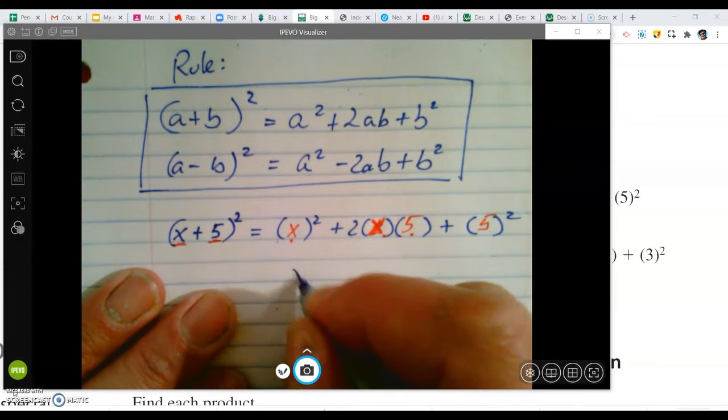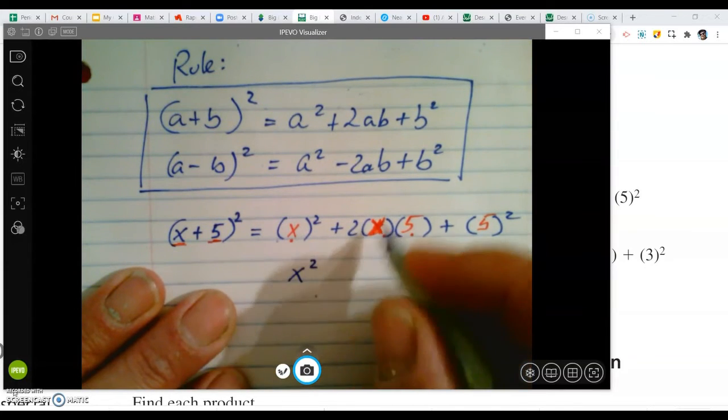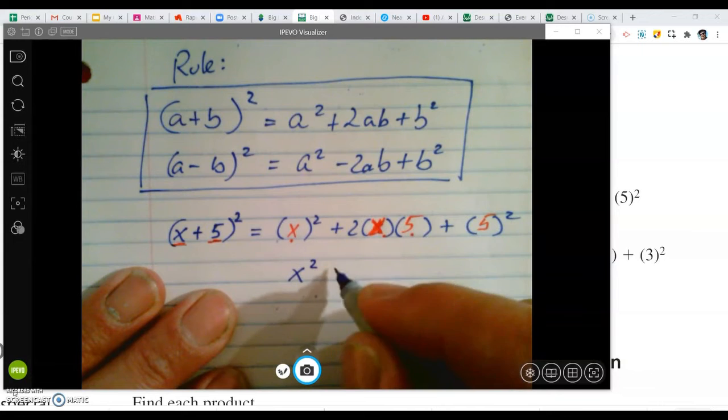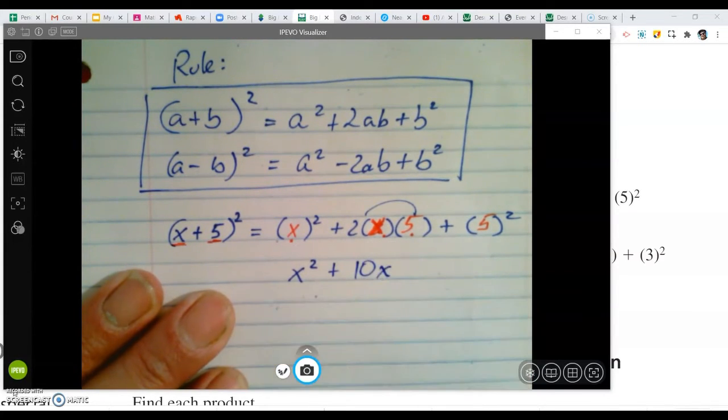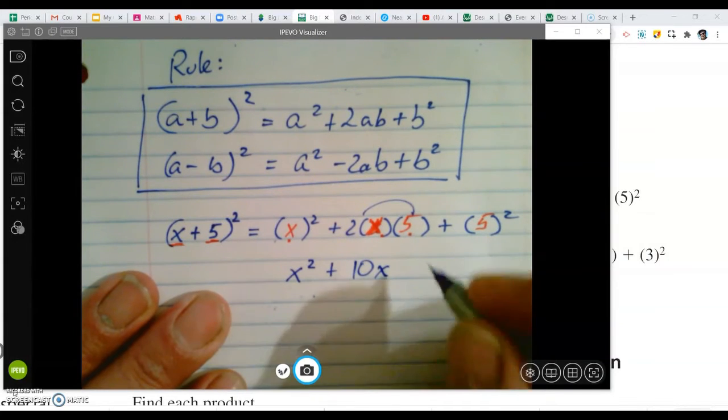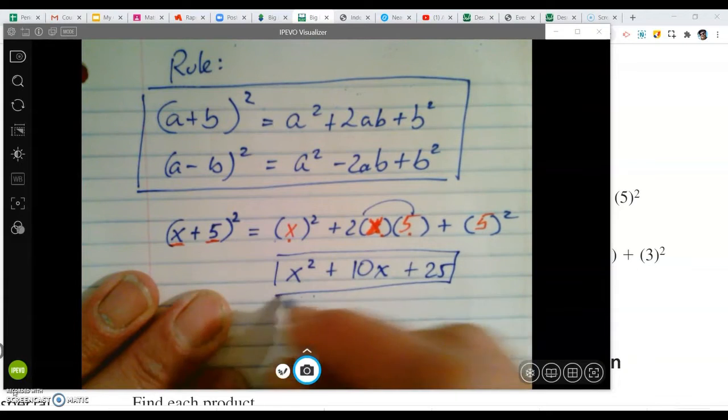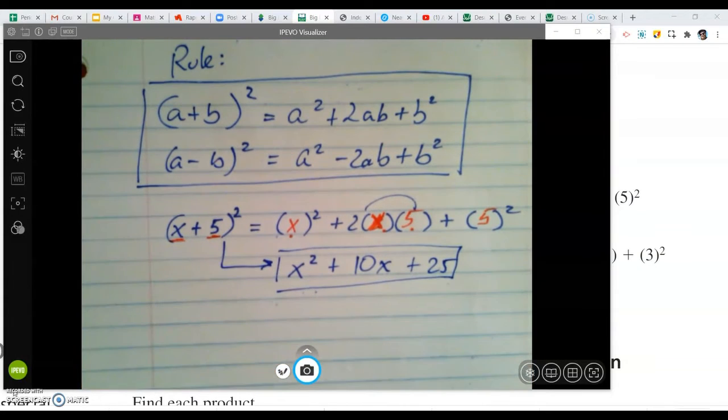x squared is just x squared. 2 times x times 5. Well, we can rearrange this and go 2 times 5 is 10, and then the x. That's totally allowed. And then 5 squared would be 25. So there's your answer. And that's it. That's how this rule works.